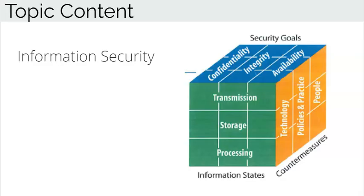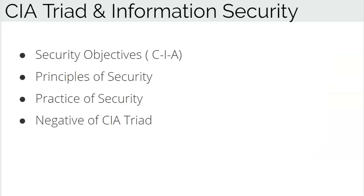Taking the first subtopic — Information Security — it is a technique with the goal to protect the confidentiality, integrity, and availability of information. Information security can be implemented via technologies, policies, practices, and people. We also need to protect information in three states: the transmission state, the storage state, and the processing state.